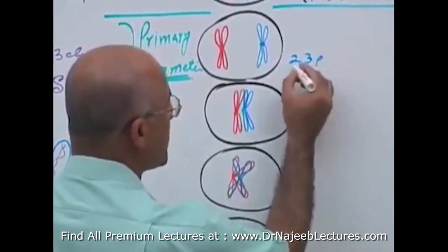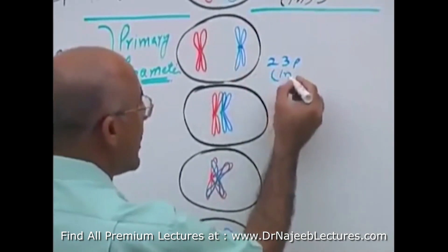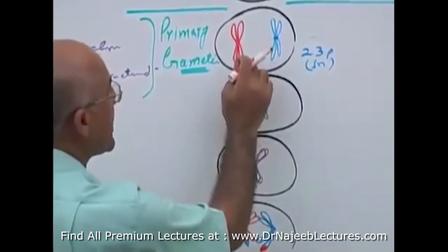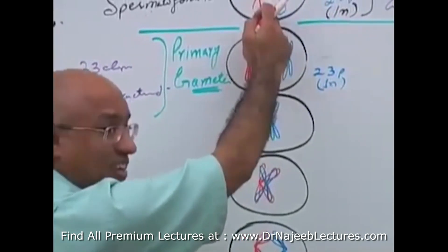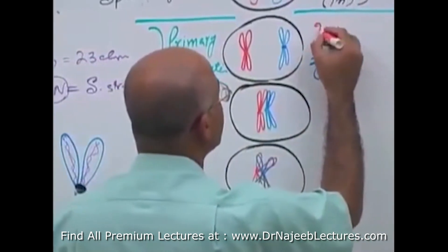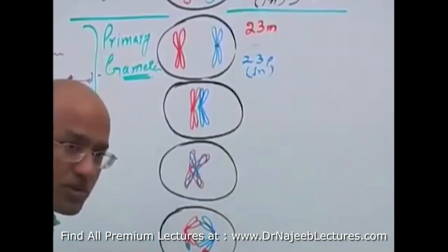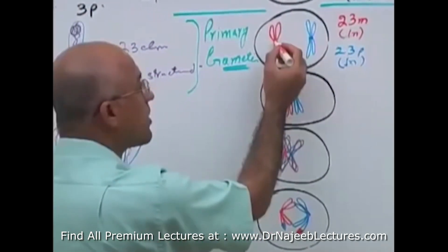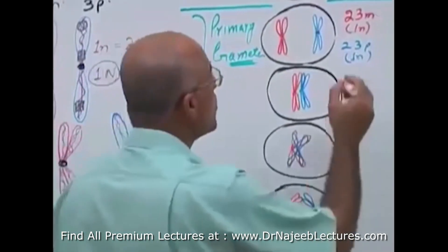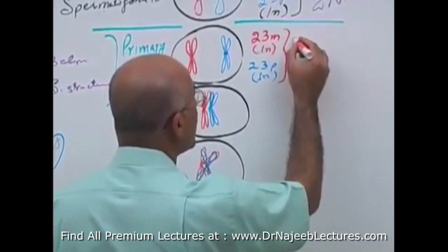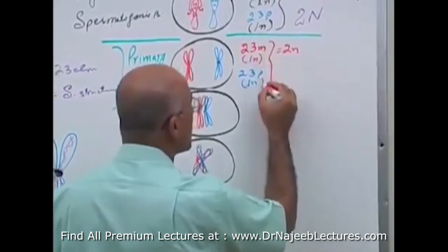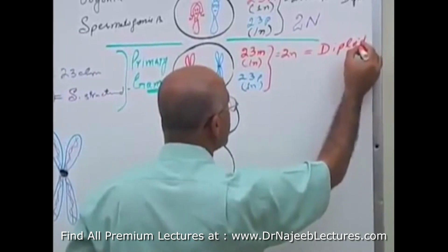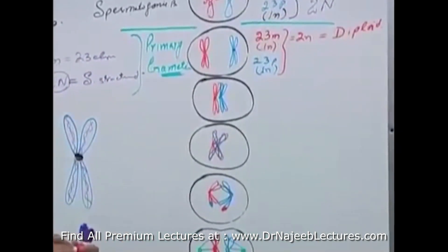The paternal chromosomes are 23, still one small n, because even though they are double structured, the number of chromosomes depends on the number of centromeres. Similarly, the 23 maternal chromosomes are double structured but still one small n. Together, the total number of chromosomes is still 2 small n — the cell remains diploid.